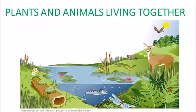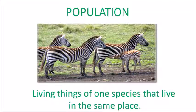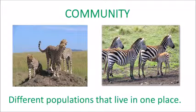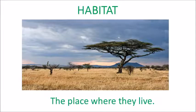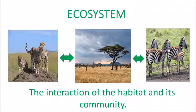Plants and animals live together. A population consists of living things of one species that live in the same place. Different populations that live in one place are a community. The place where they live is called a habitat. The interaction of the habitat and its community forms the ecosystem.